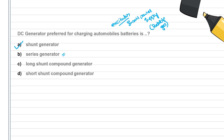We use small-distance operations with flat compound components. We use differential compound generators for arc welding. We use differential components, and with the differential generator we get a huge voltage drop and constant current.